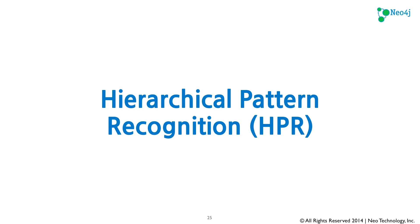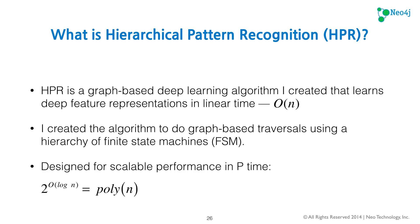Now I'm going to talk about how I created an extension in Neo4j to do this. I call it Hierarchical Pattern Recognition, or HPR. I chose a new method because I wanted to use the power of a graph database to traverse through a hierarchy of nodes to evaluate on some function. HPR is a graph-based deep learning algorithm that learns deep feature representations in linear time — which is key. I created the algorithm to do graph-based traversals using a hierarchy of finite state machines, and designed it to be scalable in polynomial time.